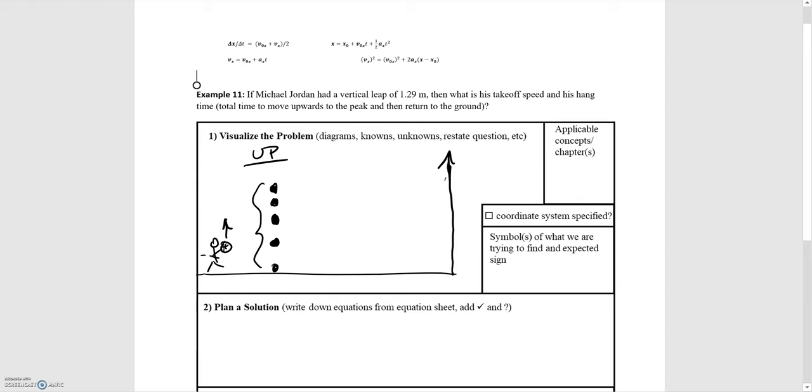In this video we'll be going over example 11 from the note packet. If Michael Jordan had a vertical leap of 1.29 meters, then what is his takeoff speed and his hang time?